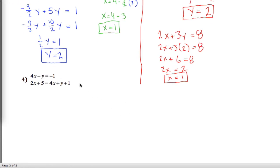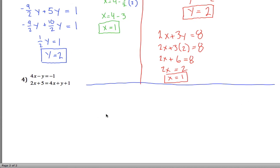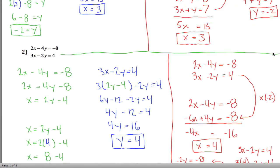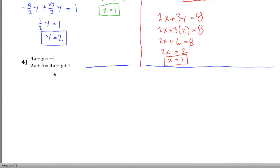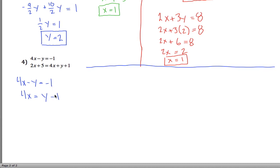Last problem. I want to start by using the substitution method. I've got 4x minus y equals negative 1 and 2x plus 5 equals 4x plus y plus 1. That second equation is a mess. I'm going to take the first equation and solve it for y: if 4x minus y equals negative 1, I'll add y to both sides, then add 1 to both sides. What you get is y equals 4x plus 1.